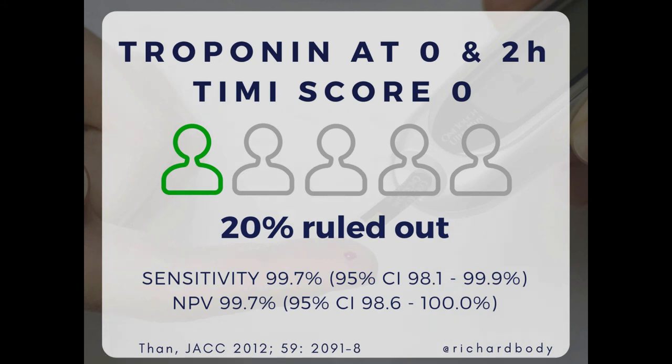Martin and his group with Louise Cullen also derived the EDACS score, which works similarly — two tests two hours apart with a score developed specifically to rule out in the ED. That works even better: about 40% of people go home after the two-hour test.